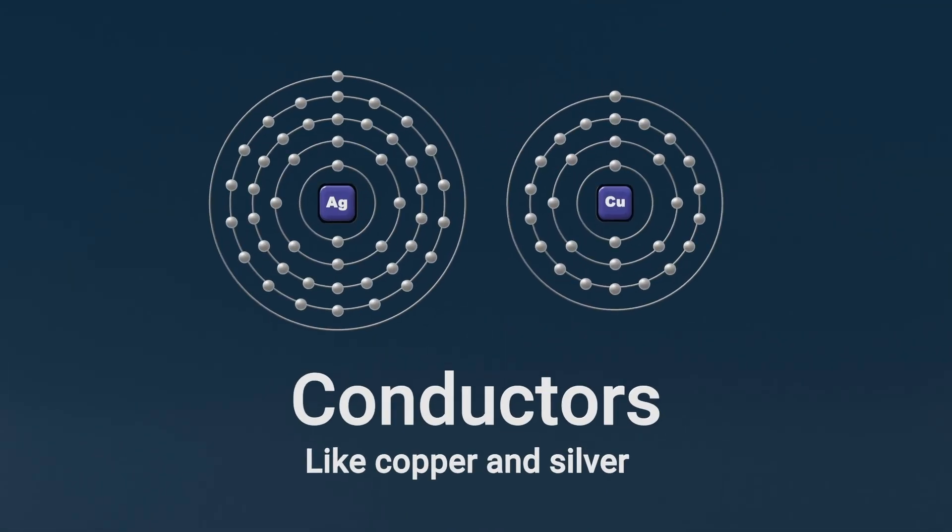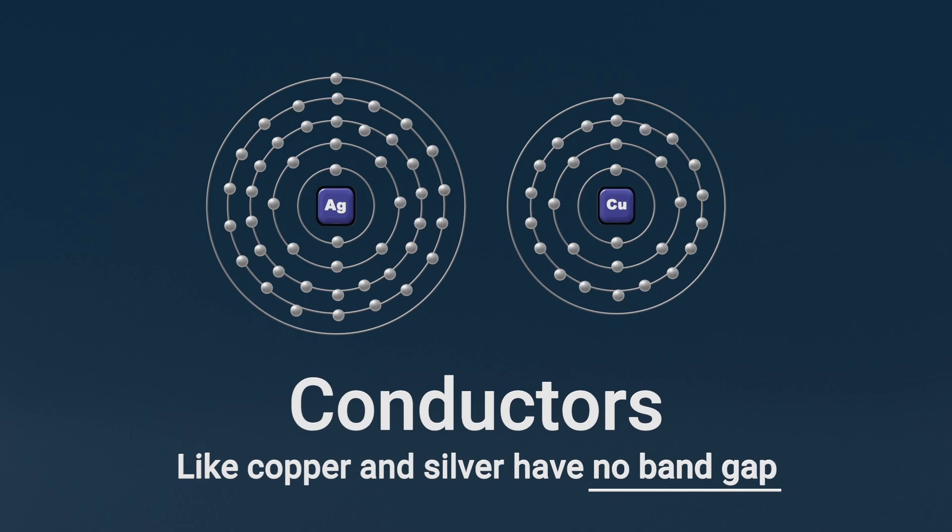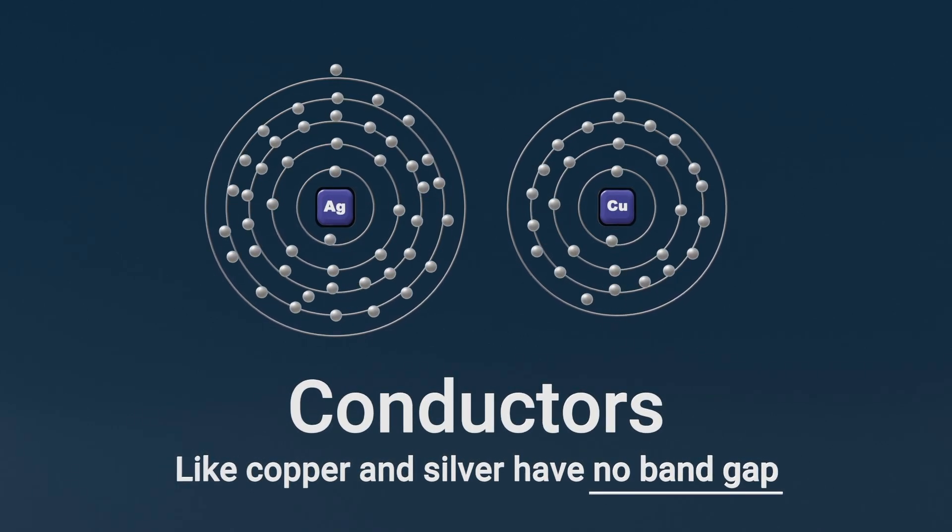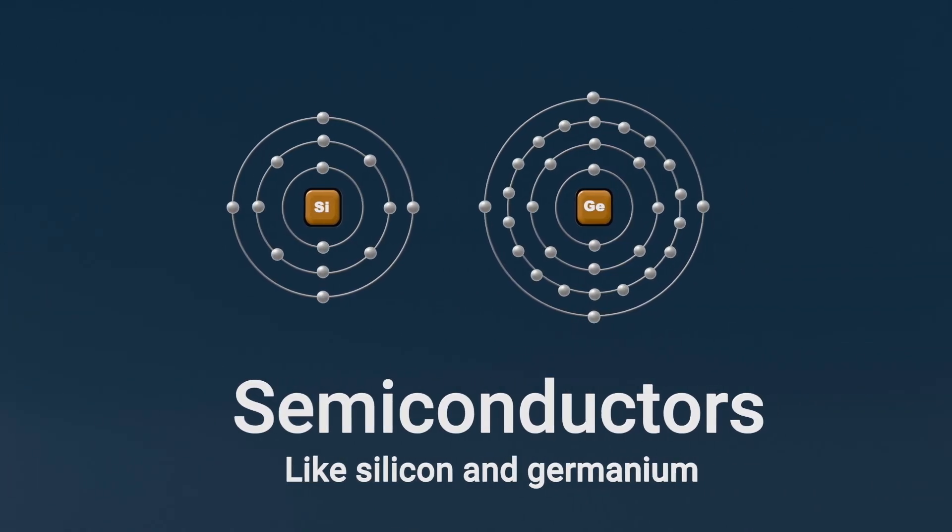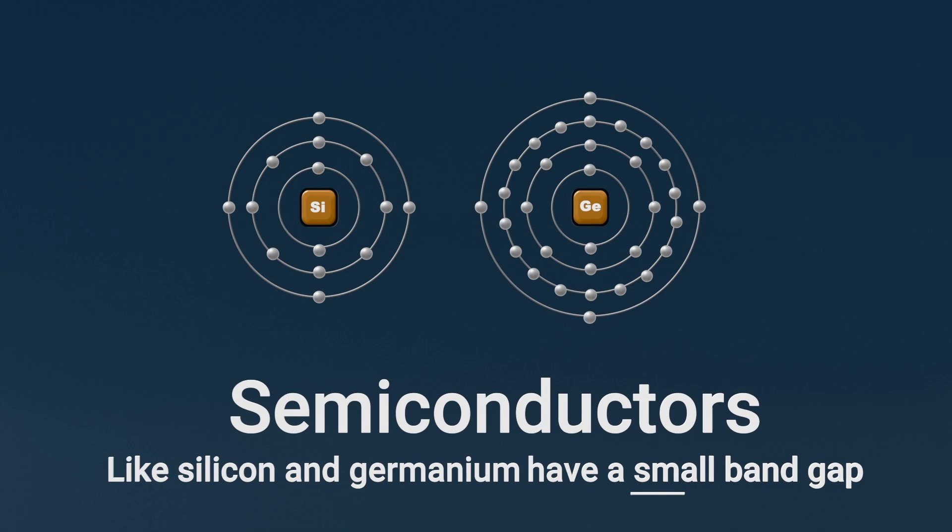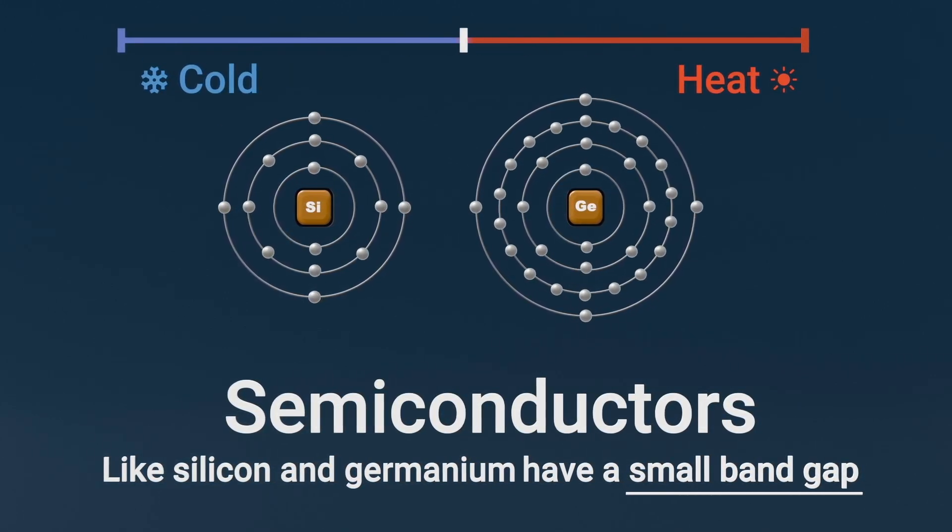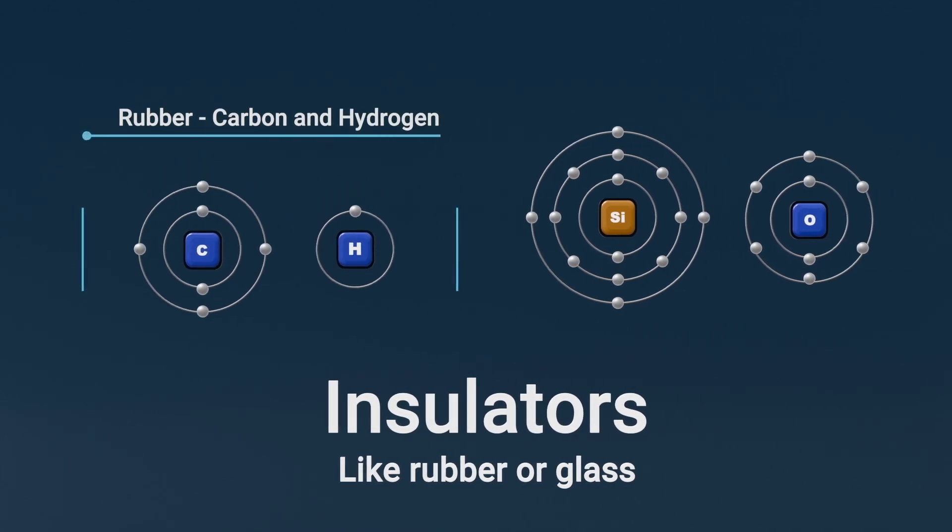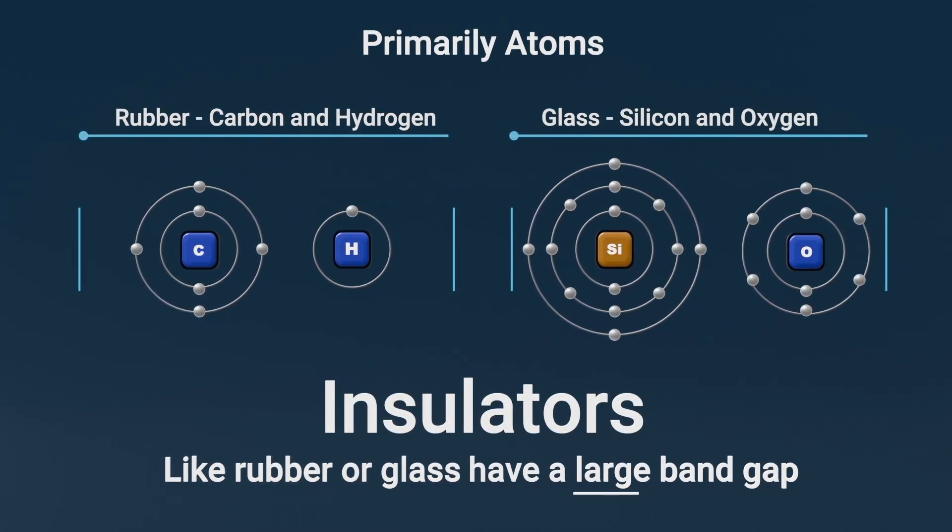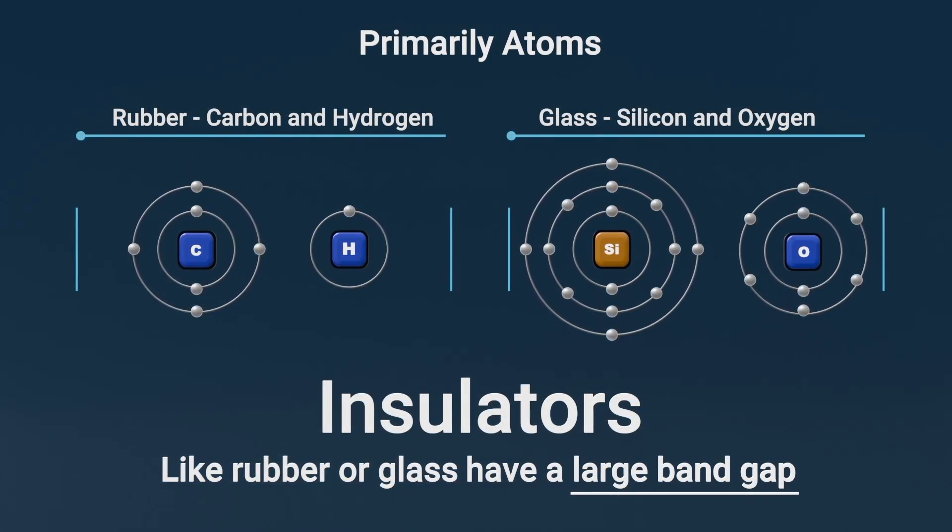Conductors, like copper and silver, have no band gap. Electrons move freely within them. Semiconductors, like silicon and germanium, have a small band gap. Electrons can move with external energy, like heat or light. Insulators, like rubber or glass, have a large band gap. Very few electrons can move.